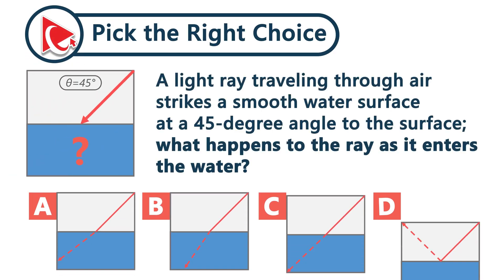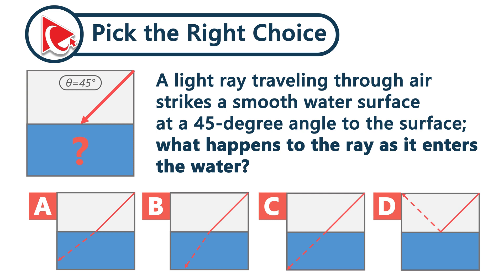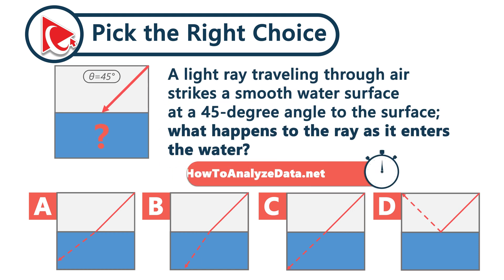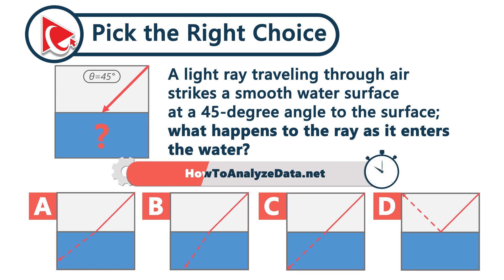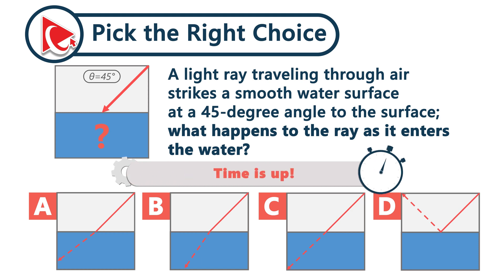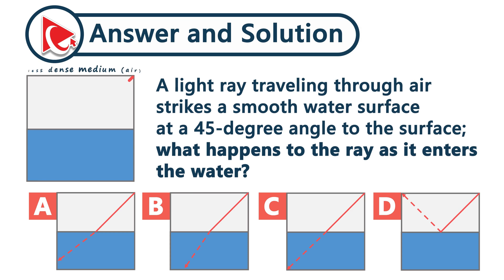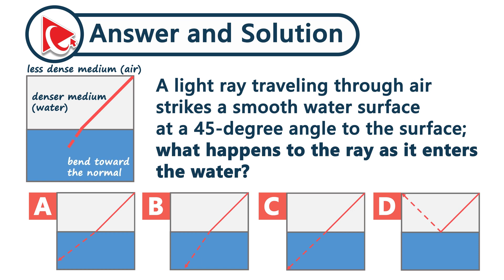A light ray traveling through air strikes a smooth water surface at a 45-degree angle to the surface. What happens to the ray as it enters the water? When a light ray moves from a less dense medium — air — to a denser medium — water — its speed decreases, causing it to bend toward the normal, an imaginary line perpendicular to the surface at the point of contact. The correct answer is choice B.